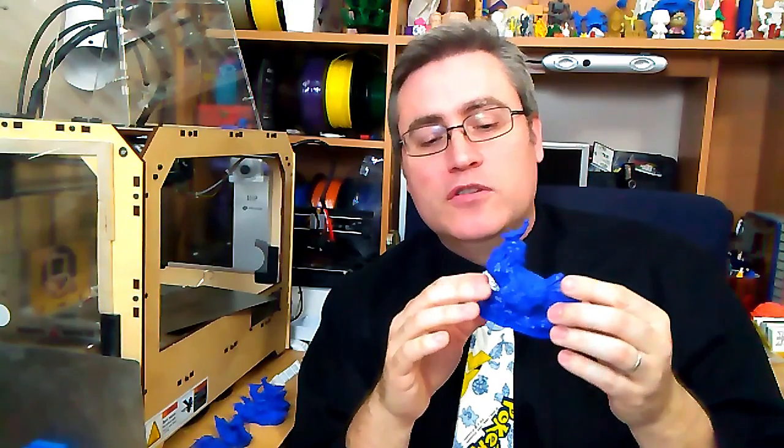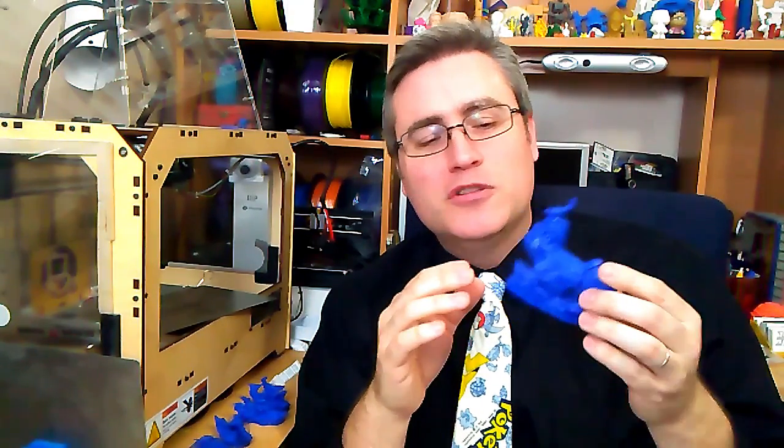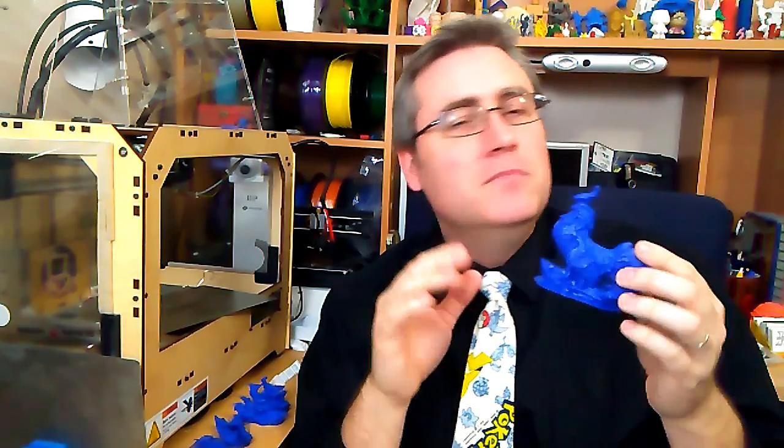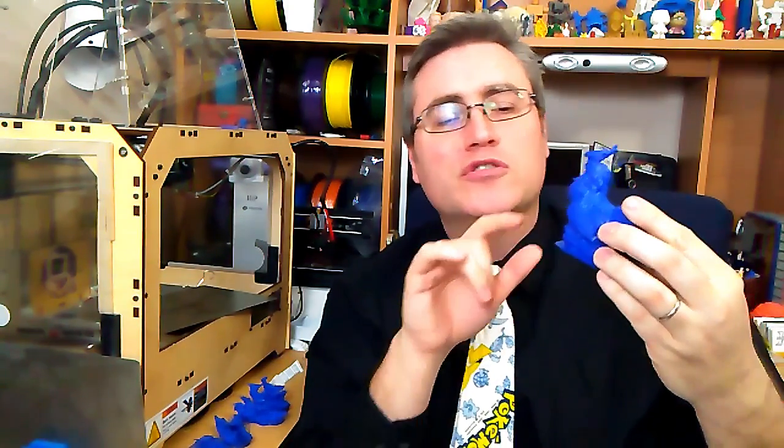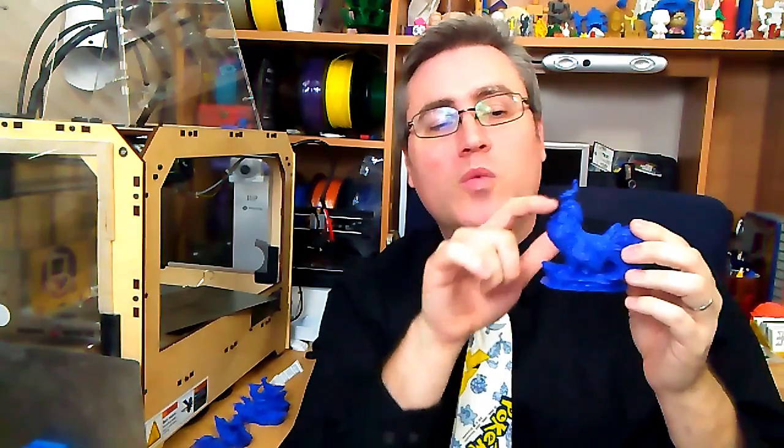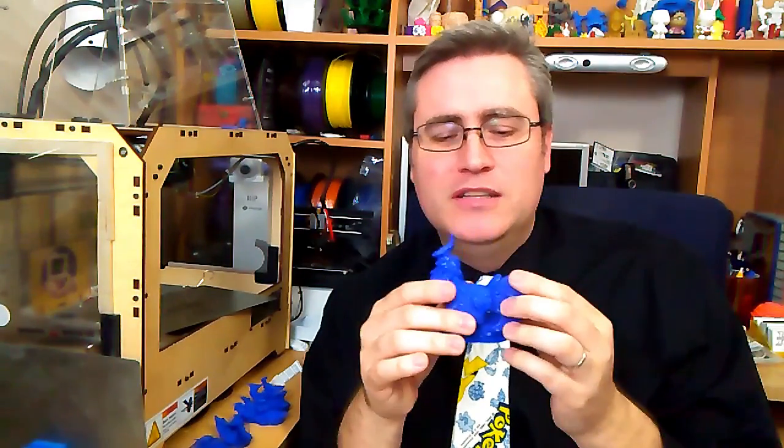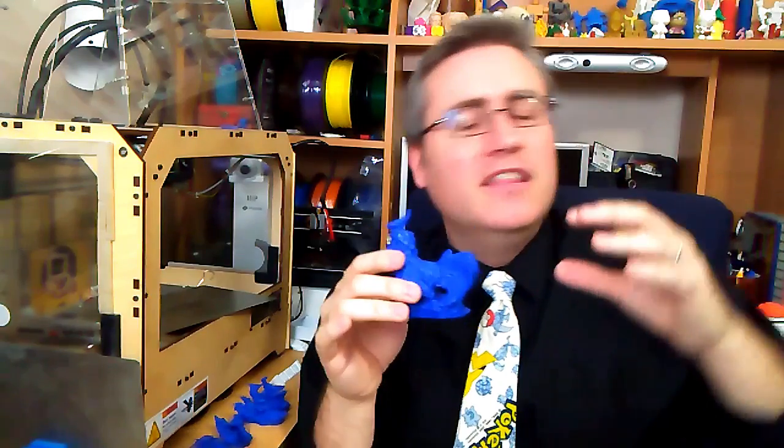When he uploaded it to Thingiverse, he said that it needed supports, but I looked at this model and to me it seemed like it might print without them. There were certainly some spots with extreme overhangs, especially under the wings, and the beak was kind of pushing things a little bit, but there was nothing that was dangling.